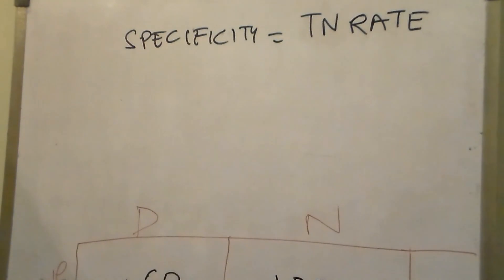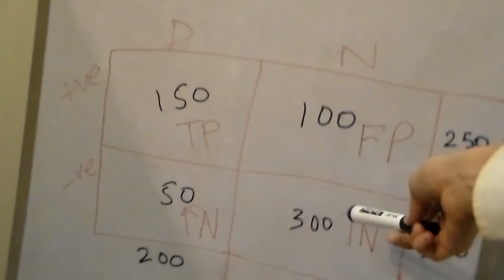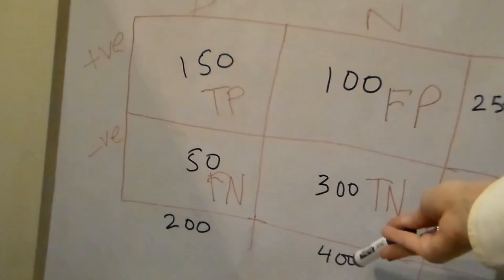Hey guys, welcome back. Let's continue. Specificity of the test is also called the true negative rate, which means it is the number of people who correctly tested negative for the disease when they in fact did not have the disease.